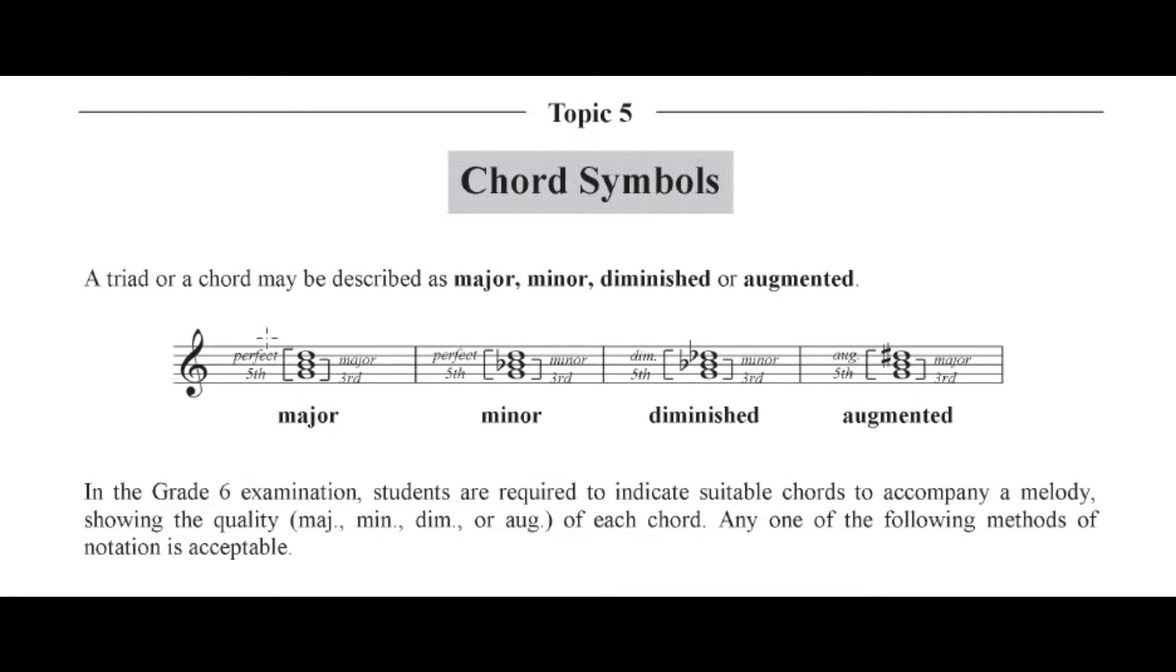A major triad has an interval of a major third and a perfect fifth. A minor triad has an interval of a minor third and a perfect fifth. For a diminished triad, it has a minor third and a diminished fifth. And for an augmented triad, you will hear a major third and an augmented fifth.